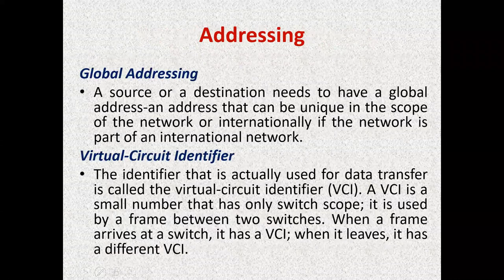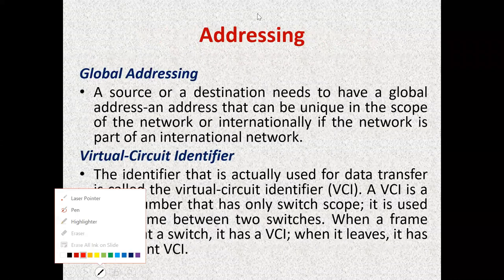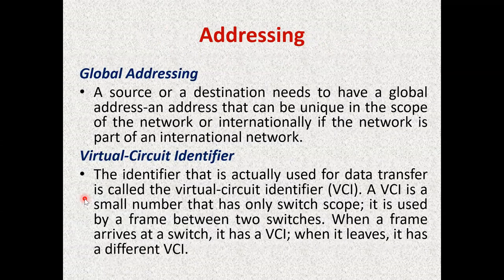For data communication in VCN, it uses two kinds of addresses. One is the global address — you can use the MAC address as a global address for data communication here because it operates in the data link layer. The other is a local address with limited scope, called VCI or virtual circuit identifier.